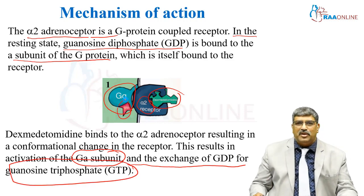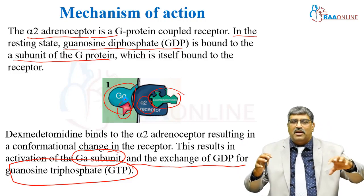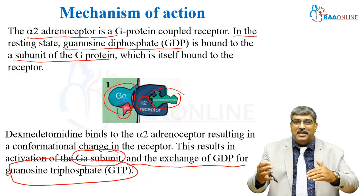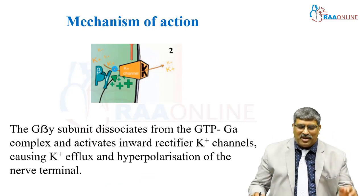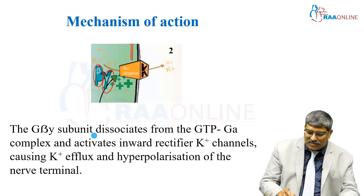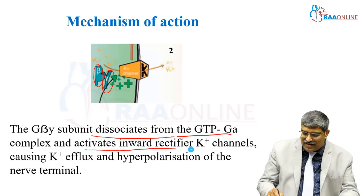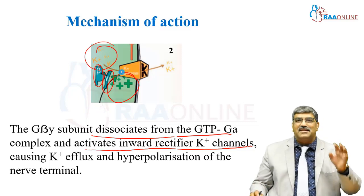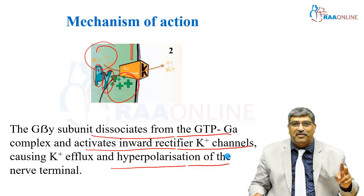As dexmedetomidine binds to the alpha-2 G protein-coupled receptor, the beta and gamma subunits dissociate from the complex and activate inward rectifier potassium channels. Thereby, potassium efflux occurs and there is hyperpolarization of the nerve terminal.